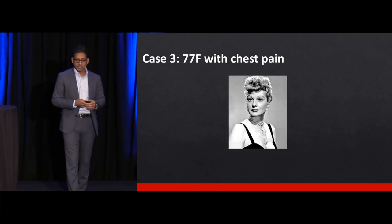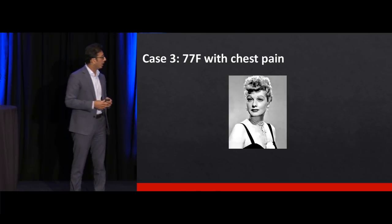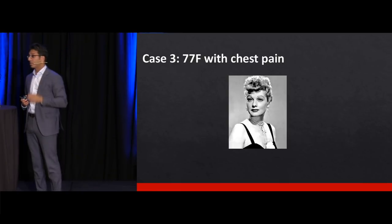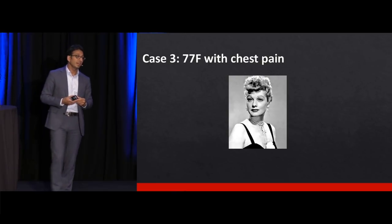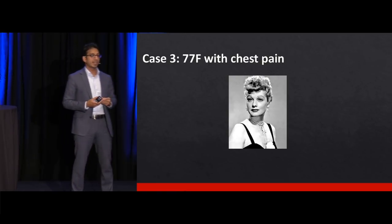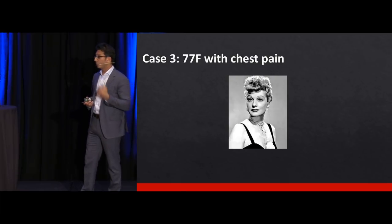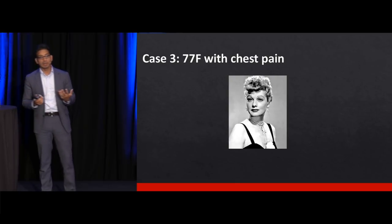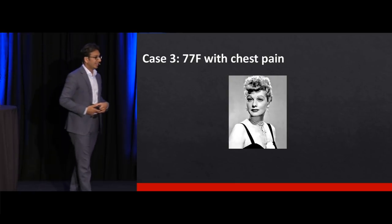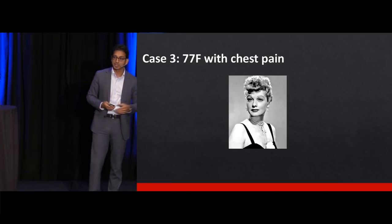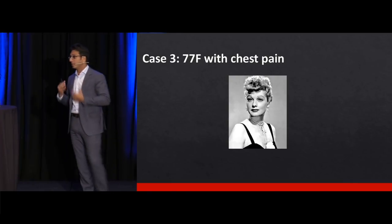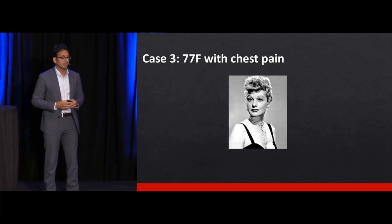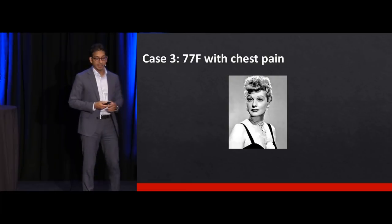The 77-year-old female with chest pain was actually Lucille Ball. She presented to the ED with sudden onset of chest pain — she was a heavy smoker — was diagnosed with acute aortic dissection, got surgery, and initially did well. Unfortunately, a few days later she was found to have a AAA as well, not related to the dissection surgery but reflecting her underlying vascular disease, and that ultimately killed her.